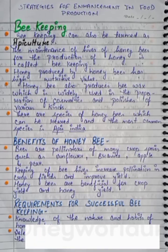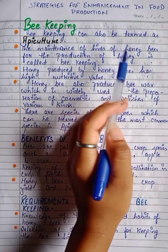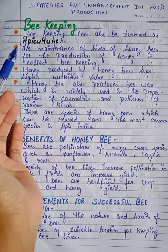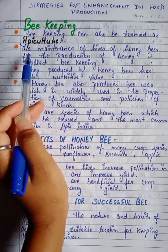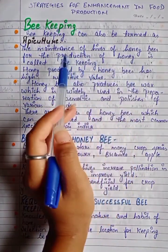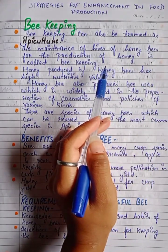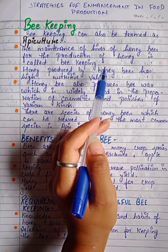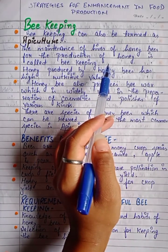Beekeeping can also be termed as apiculture. What is beekeeping? The maintenance of hives of honey bees for the production of honey is called beekeeping. The honey bees produce honey, and we harvest that honey — that is beekeeping.